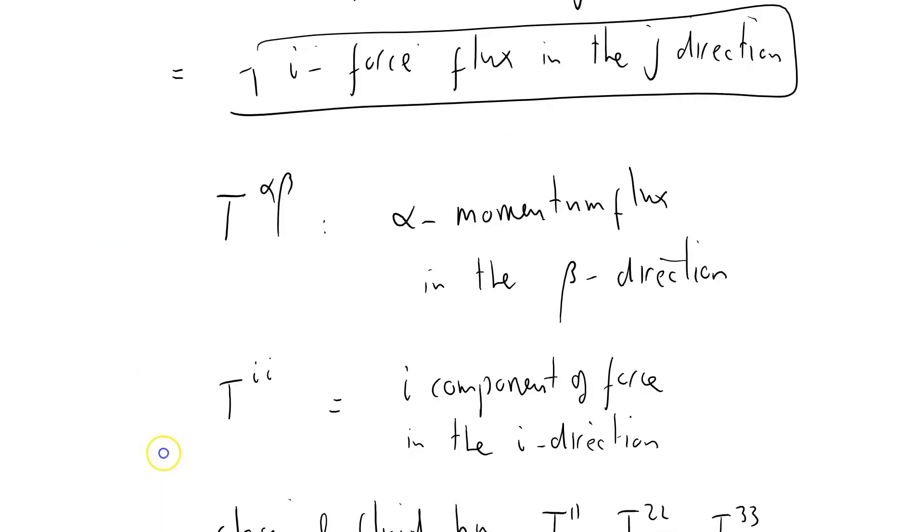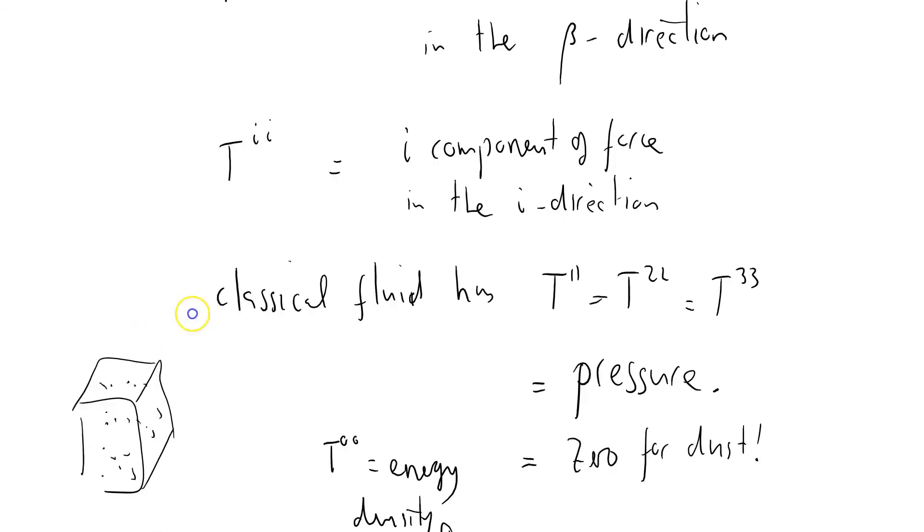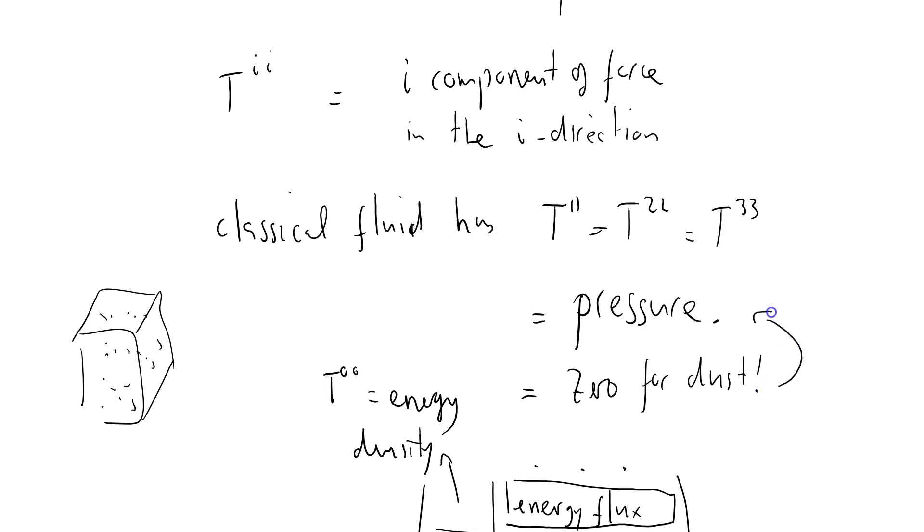Now I've been a little bit vague, I've been trying to be quite intuitive about what's going on, and I realize I've moved from dust to a classical fluid almost without mentioning it. But what I'm going to do now is to show you exactly the components of T alpha beta for the dust and the classical fluid, and I'll do that in the next screencast. Stop now.